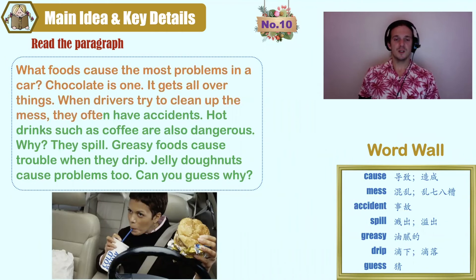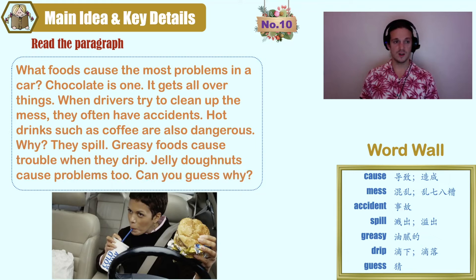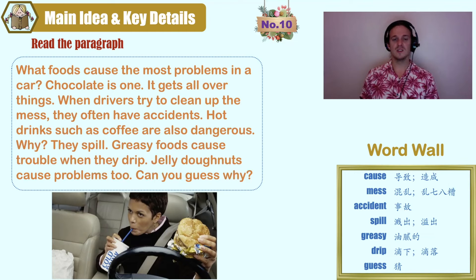What foods cause the most problems in a car? Chocolate is one — it gets all over things. When drivers try to clean up the mess, they often have accidents. Hot drinks such as coffee are also dangerous. Why? They spill. Greasy foods cause trouble when they drip. Jelly donuts cause problems too. Can you guess why?